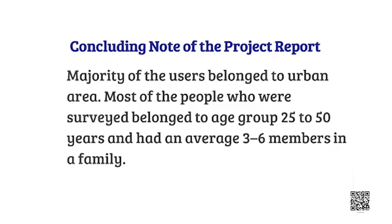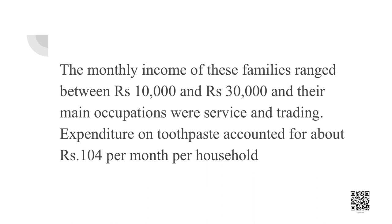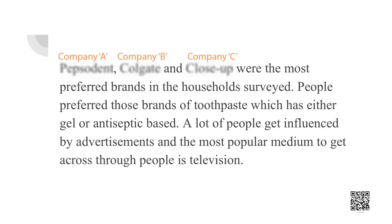The majority of people came to know about the product either through television or through newspaper. The concluding note of the project report: the majority of users belong to urban areas, most belonging to the age group 25 to 50 with an average of three to six family members. Monthly family income ranged between 10,000 to 30,000 with main occupations in service and trading. Expenditure on toothpaste was 104 rupees per household per month. Brands P, C, and C-up were most preferred, people favored gel or antiseptic toothpaste, and television was the most popular form of advertisement.